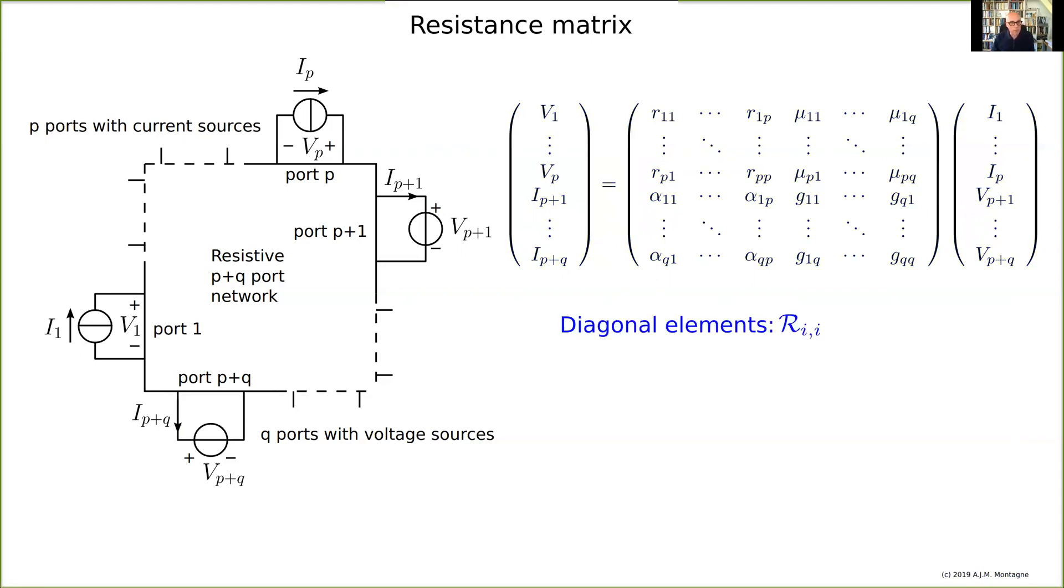The diagonal elements, you see it is either R or G, of course it is G where there is an inductor, where there was a voltage source connected to the port, and R where we have a transfer from I to voltage, from current to voltage, so it is resistance or conductance at the port.